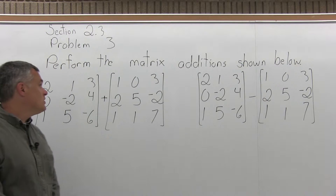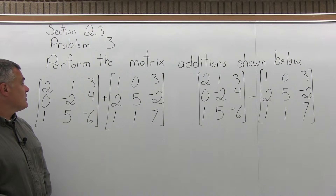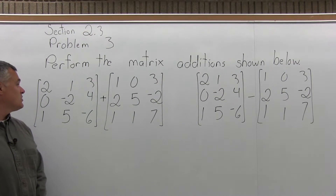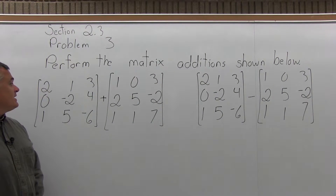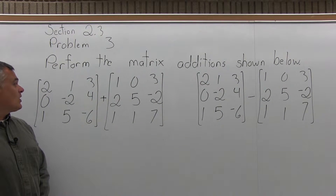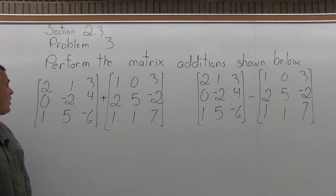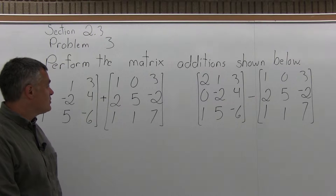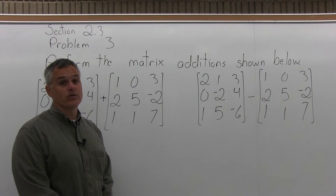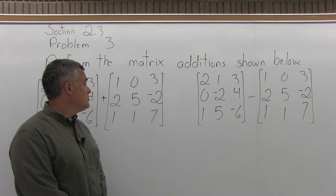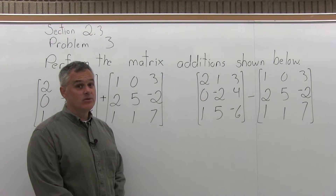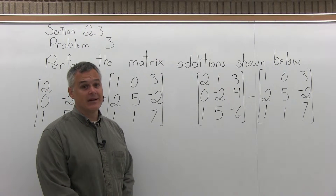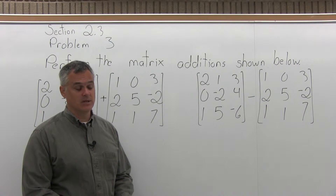So the first one, you have two matrices to add together. One of them has 2, 1, 3 across the top, then 0, negative 2, 4 in the middle row, and then 1, 5, negative 6 in the bottom row. And we want to add that to a matrix that has 1, 0, 3 across the top, 2, 5, negative 2 across the middle, and then 1, 1, 7 in the bottom. So we're going to add these two together.